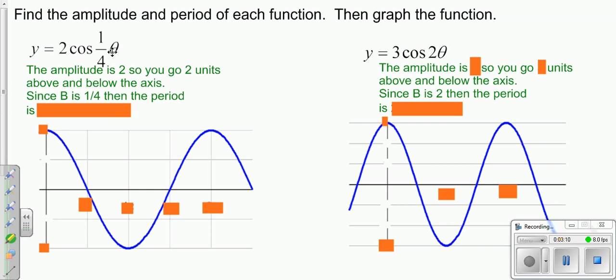And the number in front of theta still affects your period. So it's going to be 2π divided by 1/4, or 2π times 4, the reciprocal, or 8π.